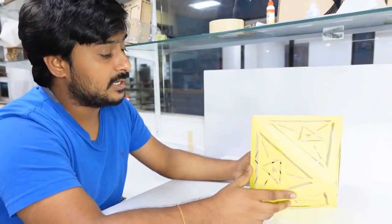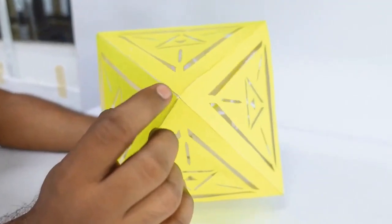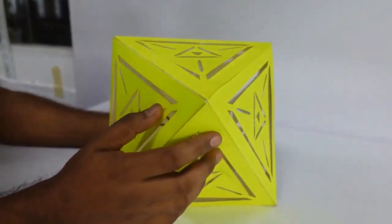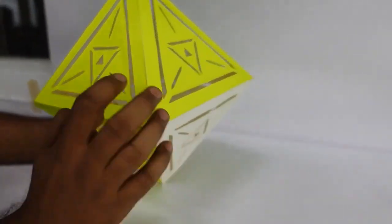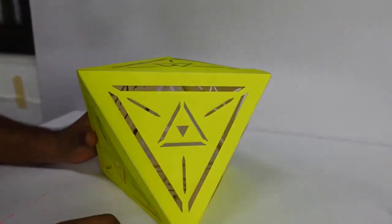This octahedron is made up of eight equilateral triangles. On each vertex there are four equilateral triangles. We can see this on all the vertices. This is the property of platonic solids. Octahedron is one of the platonic solids.